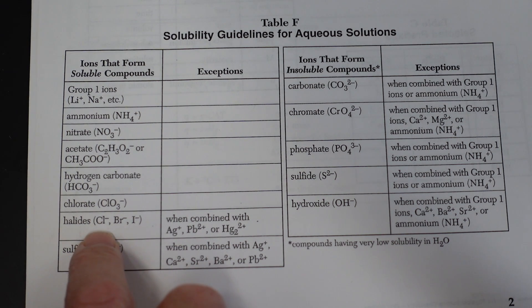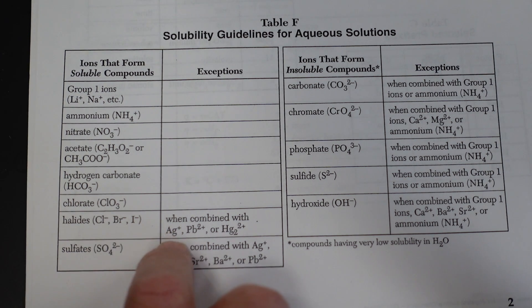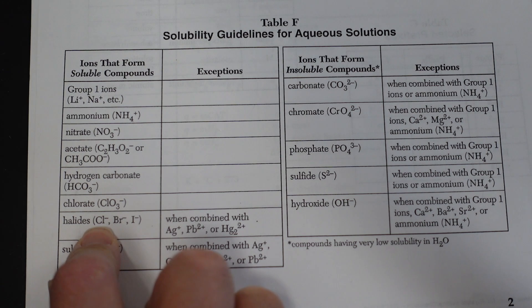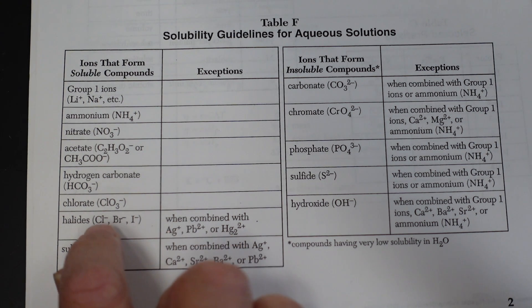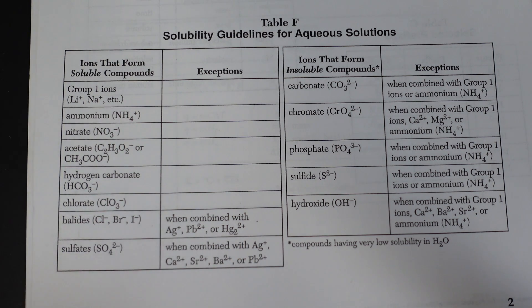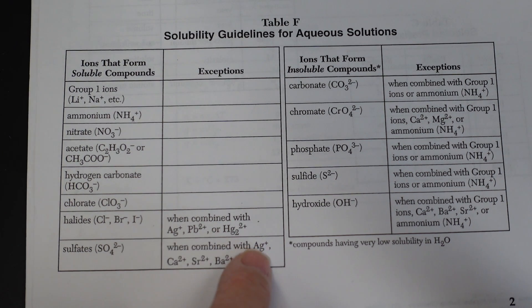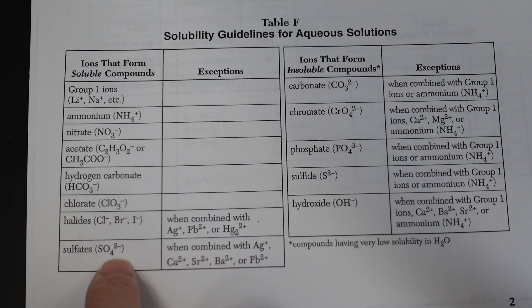Halides like chloride, bromide, and iodide are usually soluble. However there are exceptions. Silver chloride would be insoluble and form a precipitate. Lead(II) would react with chloride and form a precipitate. And dimercury(I) would react with chloride to form a precipitate. Sulfates are typically soluble, however they have even more exceptions: silver sulfate, calcium sulfate, strontium sulfate, barium sulfate, and lead(II) sulfate all form precipitates.